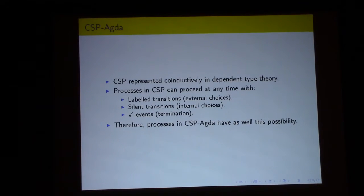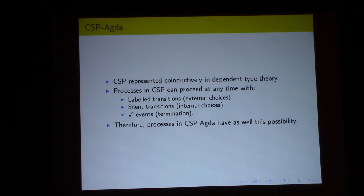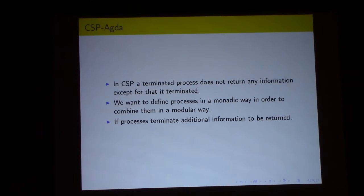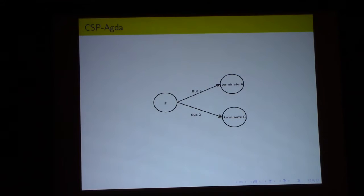We represent CSP coinductively in dependent type theory. A process in CSP can proceed at any time with a labeled transition, a silent transition, or a termination event. In standard CSP, when a process terminates it returns no information. In our representation, when the process terminates it returns some information. So we define processes in a monadic way to combine them in a modular way. For example, process P has two events: if it proceeds with event plus-one it terminates and returns result E.